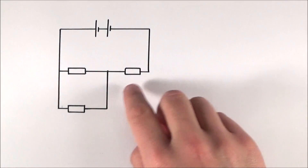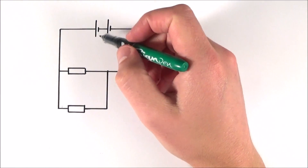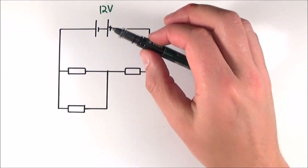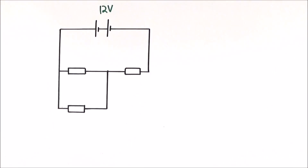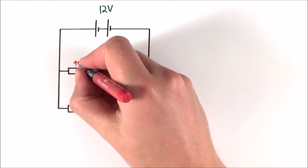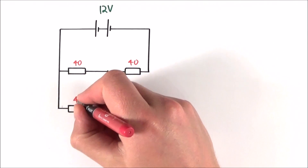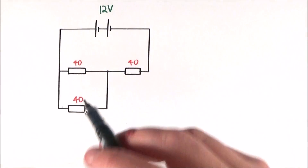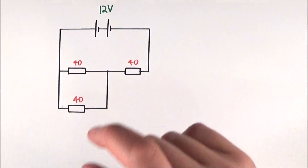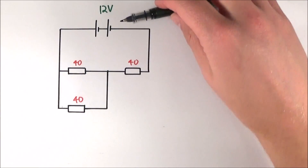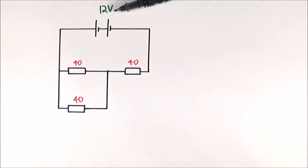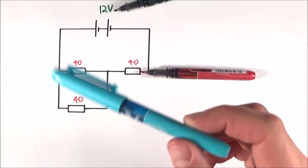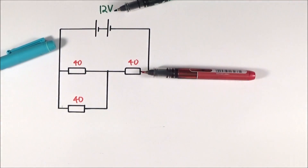Here we have an example of a very simple circuit with an EMF — a battery — of 12 volts, and we'll assume negligible internal resistance. There are three resistors, each with a resistance of 40 ohms. I'll write all the numbers on the circuit: green pen for potential differences and voltages, red pen for resistances, and blue pen for currents, so I can clearly track what's going on.